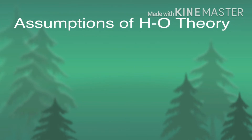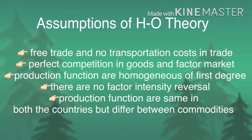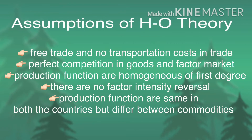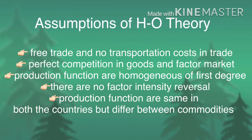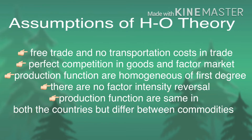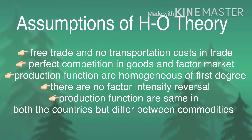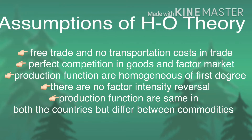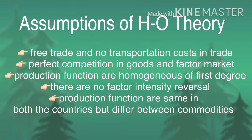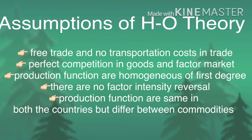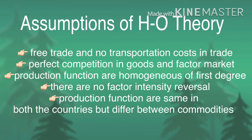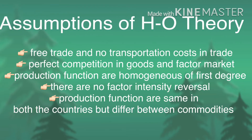Now let us see what the various underlying assumptions of the H-O theory are. The following five assumptions are essential: there are no transportation costs or other impediments to trade, and there is perfect competition in both commodity and factor markets. All production functions are governed by constant returns to scale. The two commodities show different factor intensities. The production functions differ between commodities but are the same in both countries — that is, good A is produced with the same technique in both countries.